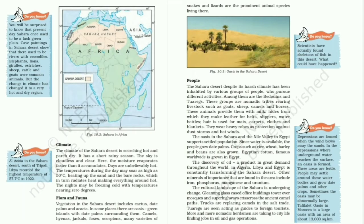Due to extreme climatic conditions and shortage of water, plants and trees are not able to survive in Sahara. Only shrubs, some grasses, and plants with long roots and waxy, leathery and hairy leaves grow here. The common plants found here are cactus, acacia, and baobab. The oases are surrounded by date palm trees. Antelopes, camels, hyenas, hedgehogs, foxes, scorpions, jackals, gazelles, snakes, and lizards are some animals that live in these deserts. Birds like ostrich, bustard, desert eagle, and owls can be seen in the interior region.